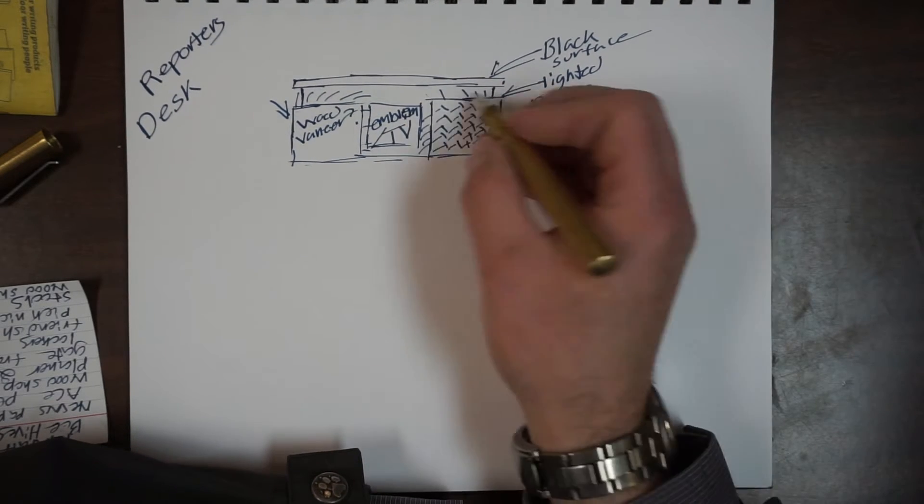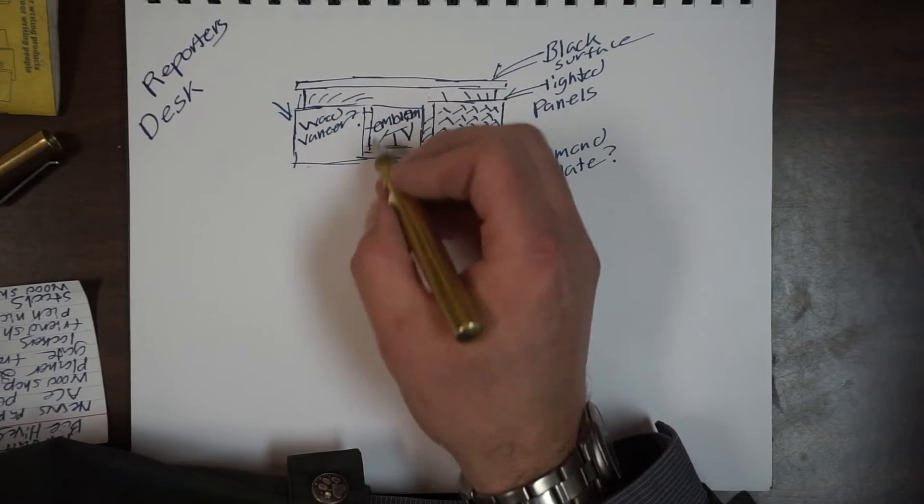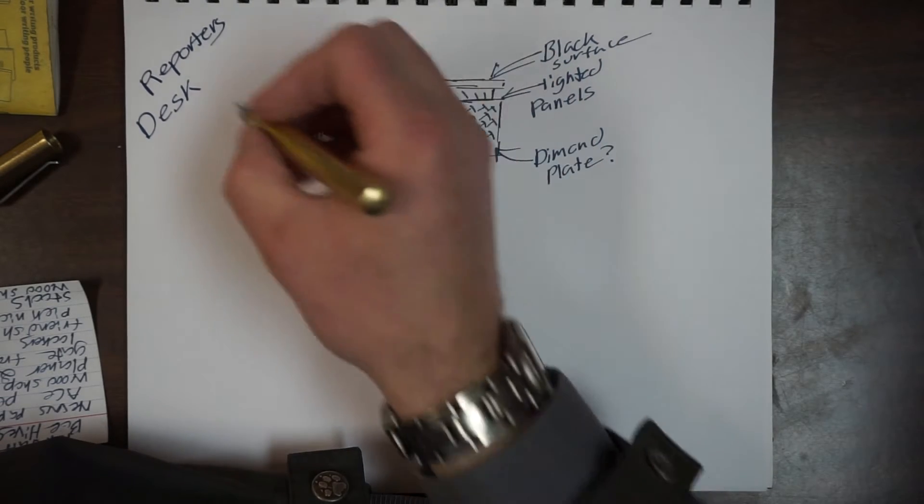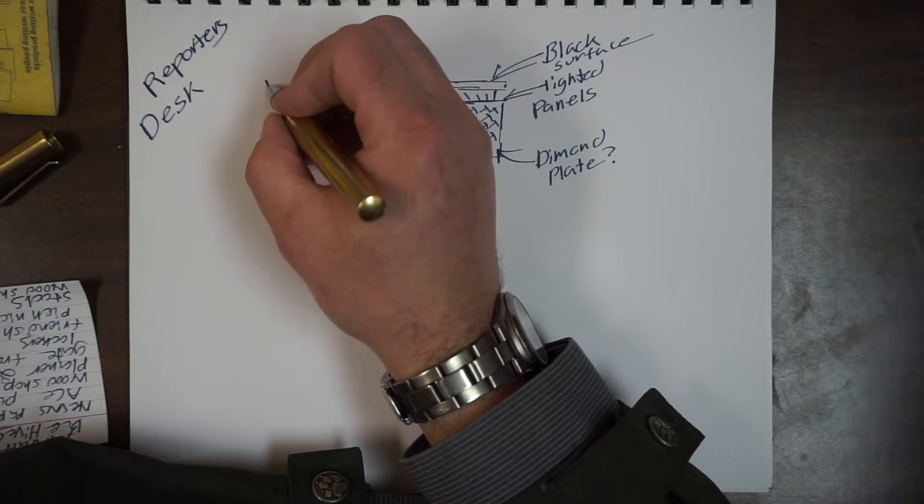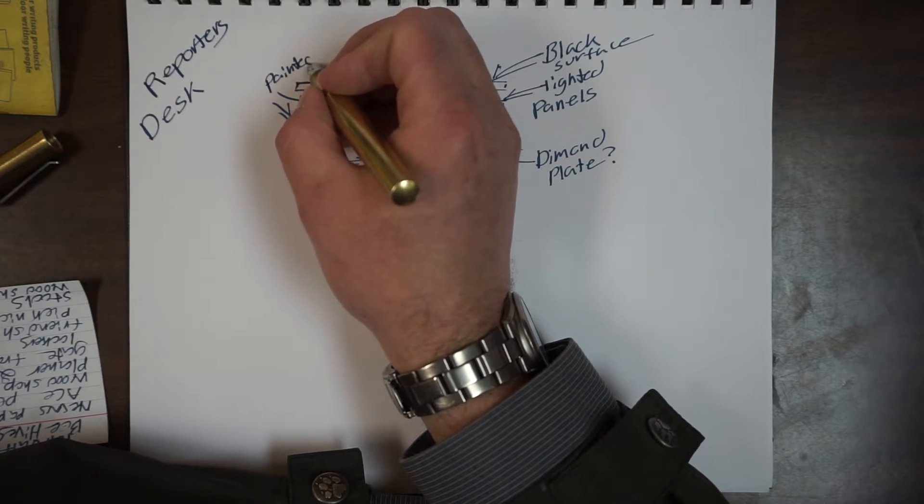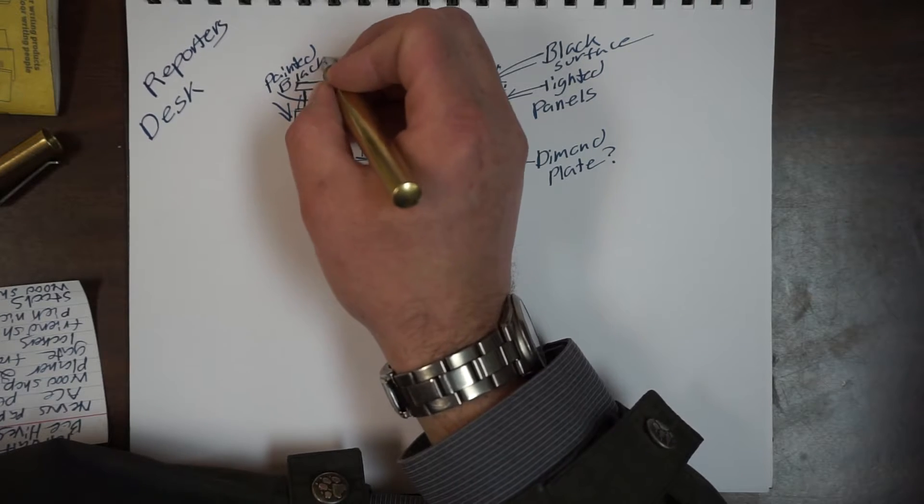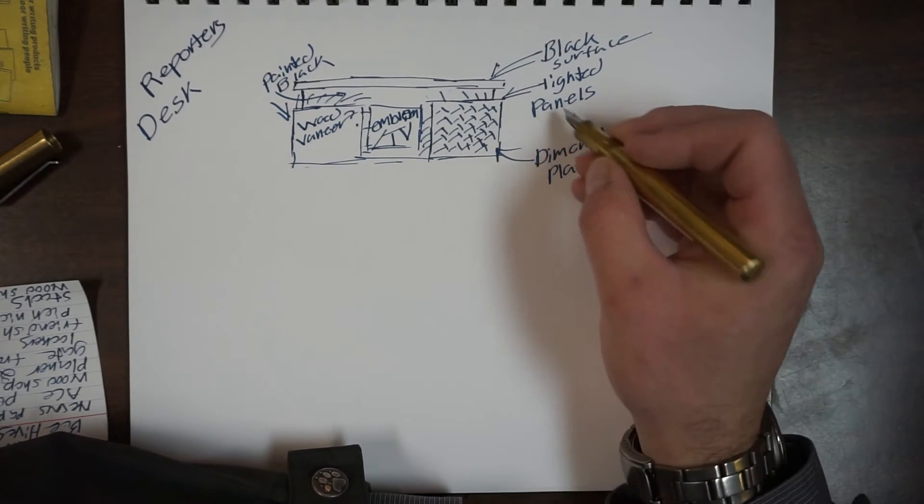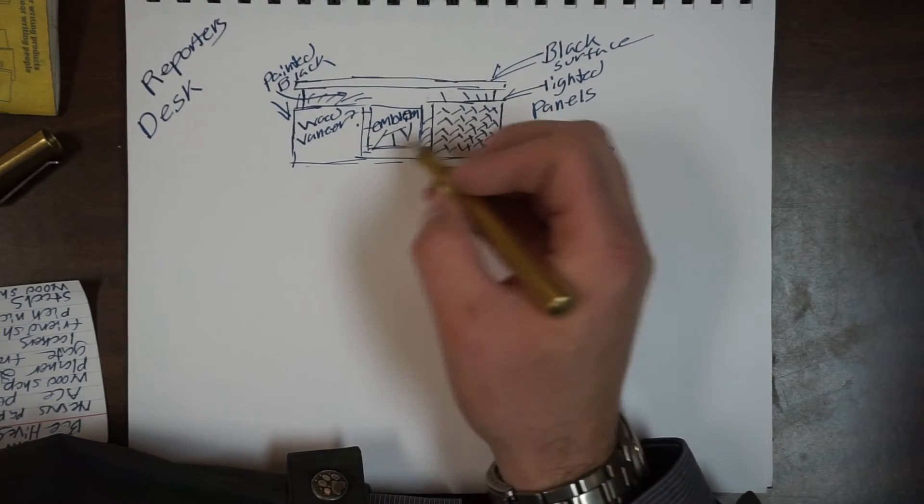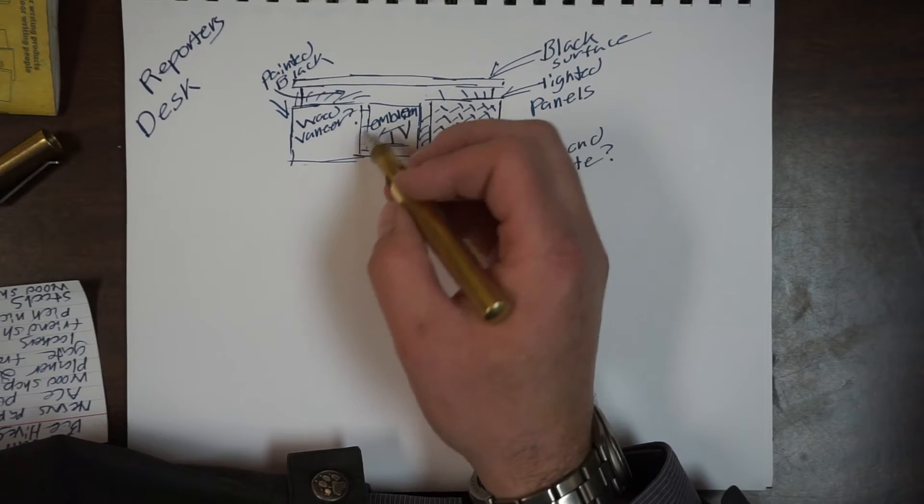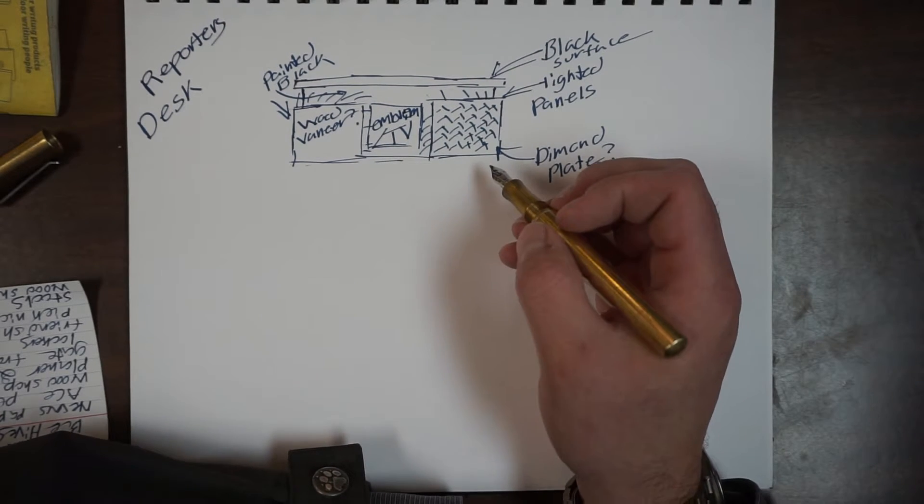It sort of depends. I'm definitely thinking a black section here, so just painted black, or some sort of textured black. So we've got lighted panels shooting out from the sides, or from behind the diamond plate or the wood veneer. We have an emblem, and we have a black surface for this.